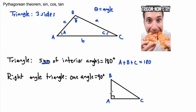It doesn't matter which angle you name A, B, or C unless labels are given in the question. In this case, angle A equals 90 degrees. The other angles B and C — I don't know their exact values, but I know they must both add up to 90 degrees, because 90 plus something plus something has to equal 180.